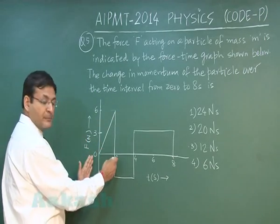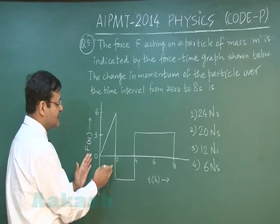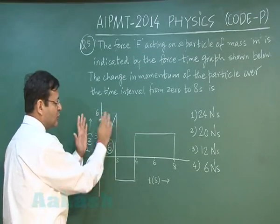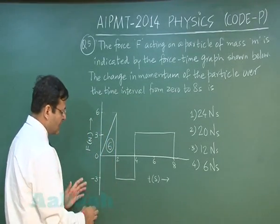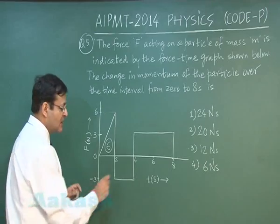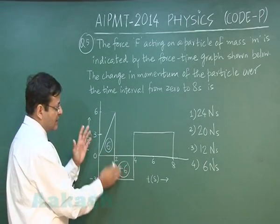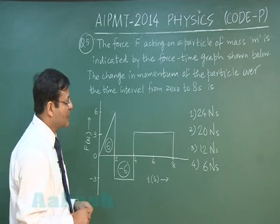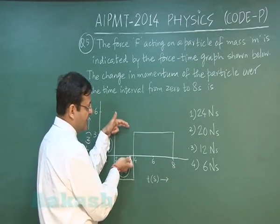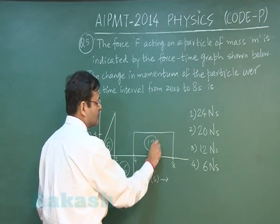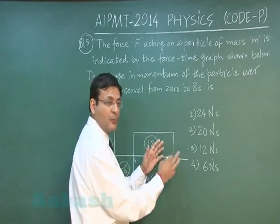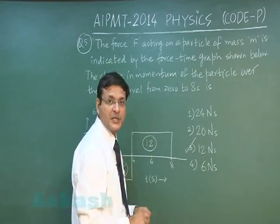From the graph: there is a triangle with base 2 and height 6, giving area = ½ × 2 × 6 = +6. The lower portion is a rectangle of sides 3 and 2 (from t = 3 to 6), giving area = −6. These two cancel each other. The remaining positive area has base 4 and height 3, giving area = +12. So the net change in momentum is 12 N·s. The most appropriate answer is the third option, 12 N·s.